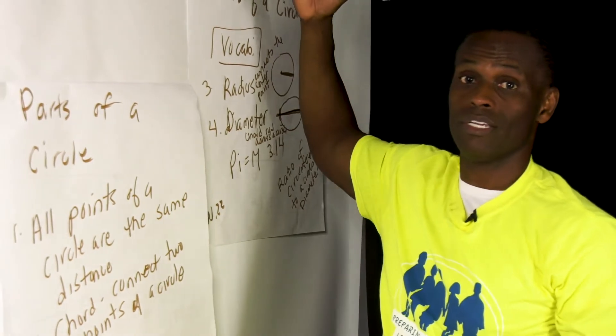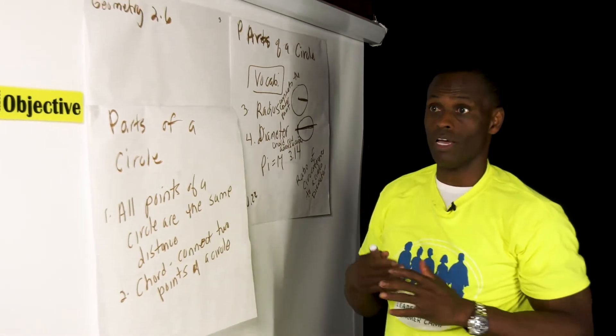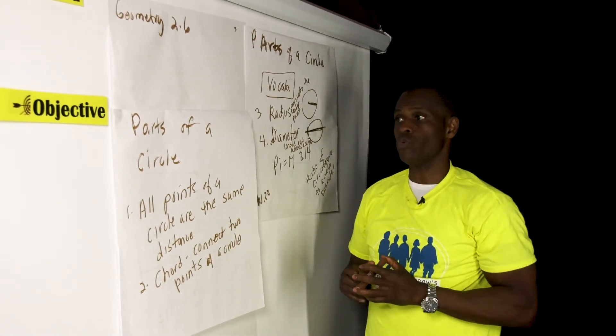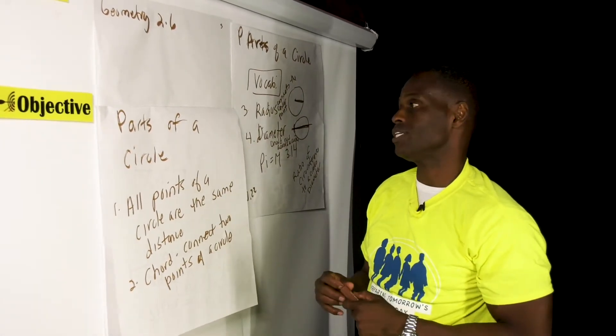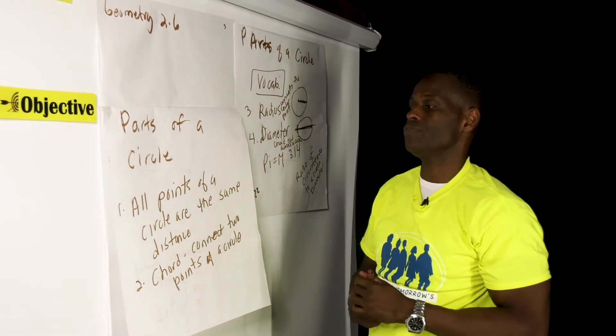So when we look at geometry, we want to look at different types of shapes. And the shape we're going to focus on today is circle. And what are the parts of a circle? One thing you've got to learn about a circle is that a circle, no matter from what perspective, all points that run across will be equal.